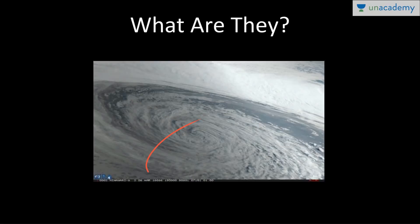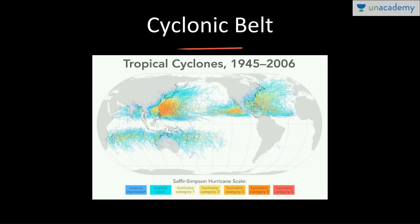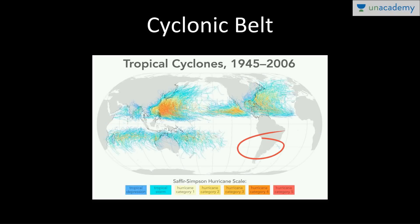Now let's see the cyclonic belt. Tropical cyclones usually occur between 8 and 20 degrees in both the northern and southern hemispheres. From 0 to 5 degrees north or south of the equator, they do not occur. This is due to the lack of Coriolis force near the equator.